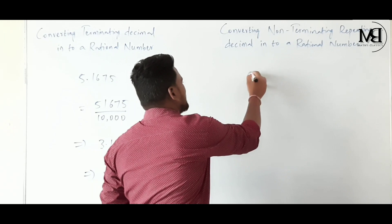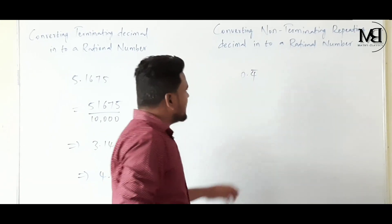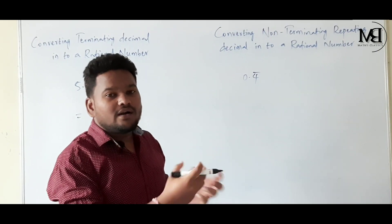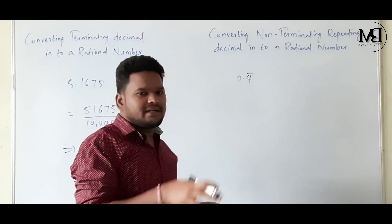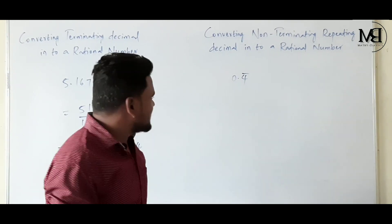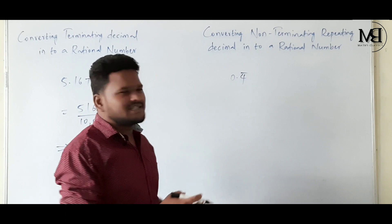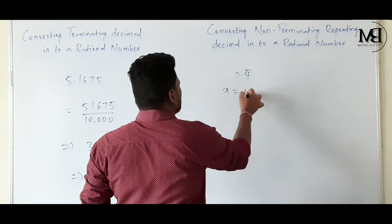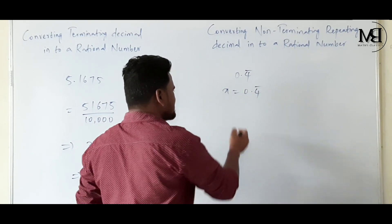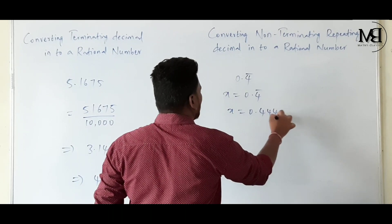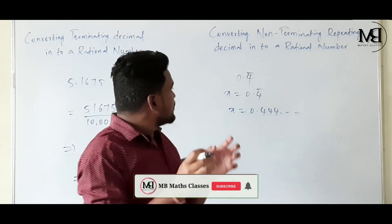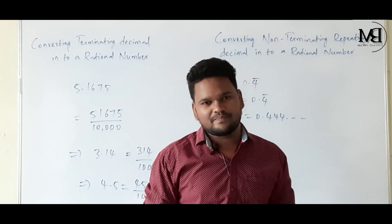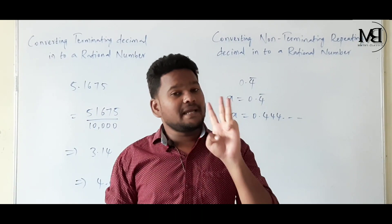Let us take one example: 0.4 bar. This is a non-terminating repeating decimal where 4 is going to be repeated. Since we do not know what 0.4 bar is, let us call it X. So X is equal to 0.4 bar, which means X is equal to 0.444 and so on. To convert this, we have to keep 3 points in mind.